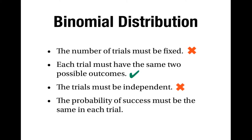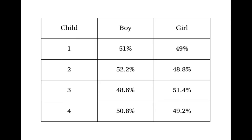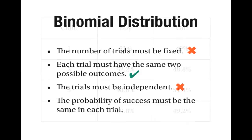It's also the case that the probability of success is not the same in each trial. For the first child the probability of having a girl is 49%; for the second trial it's 48.8%; for the third child it's 51.4%; and for the fourth child the probability is 49.2%. This shows that the number of girls in a family does not have the binomial distribution and you can't use it to calculate probabilities in this situation.